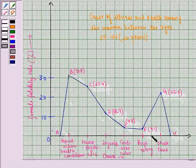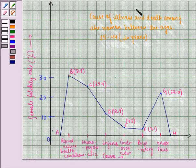So this is the graphical representation of what is given to us in the question. Now we take here cause of illness and death among the women between the ages 15 to 44 in years. So this would be the topic of this graph.